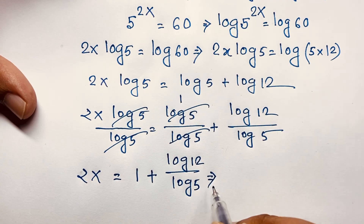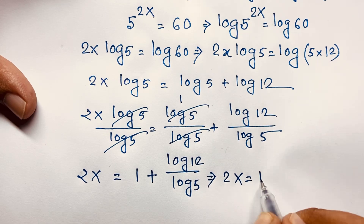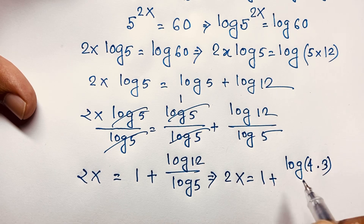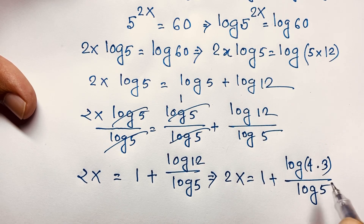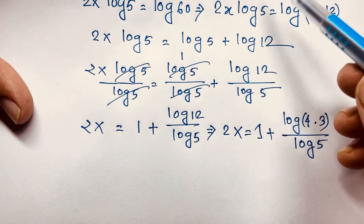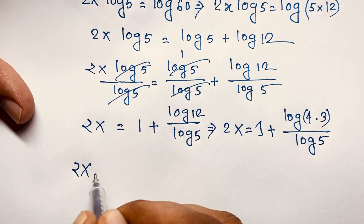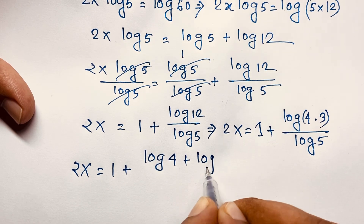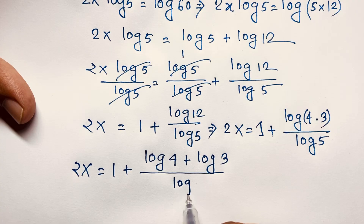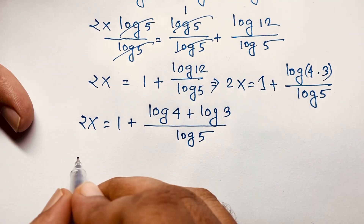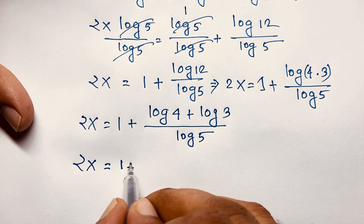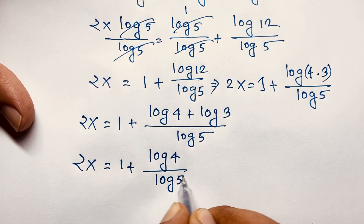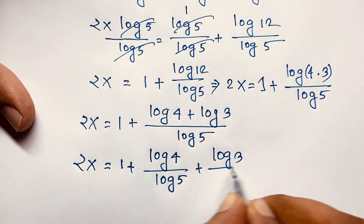If I simplify this expression, it will be 2x equals log of 12 over log 5. Since 12 equals 4 times 3, applying the product rule for logs again gives 2x equals 1 plus log 4 over log 5 plus log 3 over log 5.